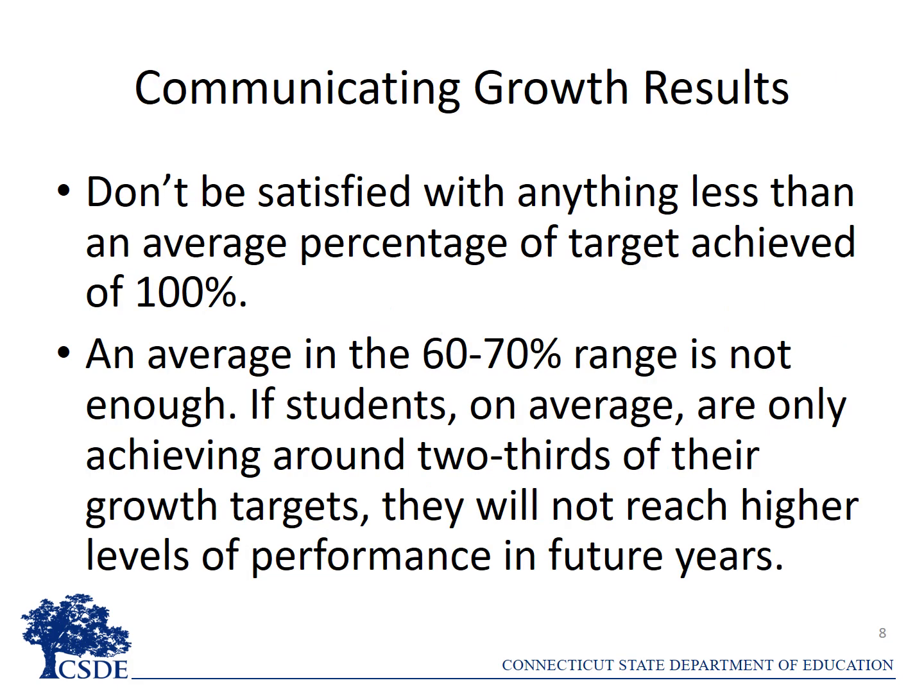We hope that this video has given you the requisite language to communicate the growth results. Don't be satisfied with anything less than an average percentage of target achieved of 100%. An average in the 60 to 70% range is simply not enough. At 60 to 70%, it means that students are, on average, only achieving around two-thirds of their growth targets. That type of growth will not get the majority of students to higher levels of performance in future years.